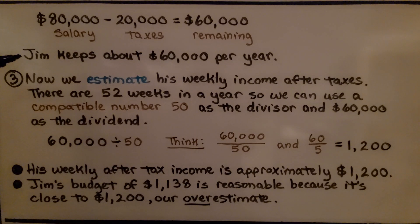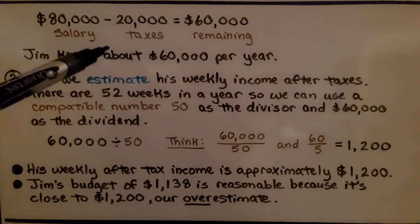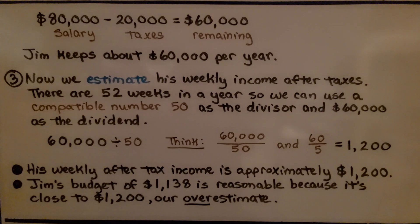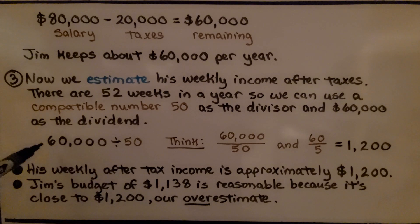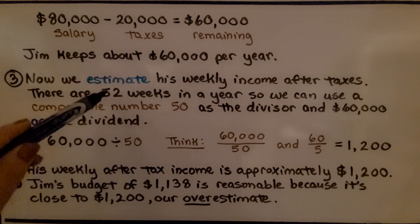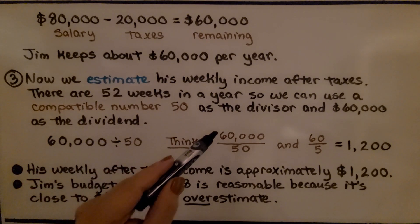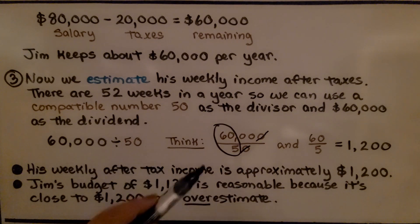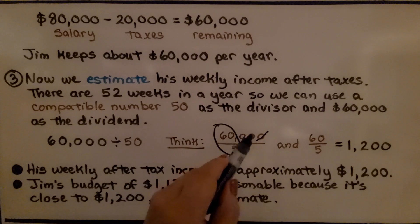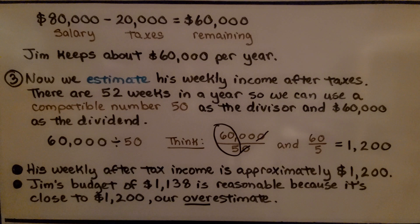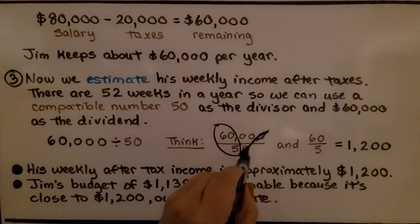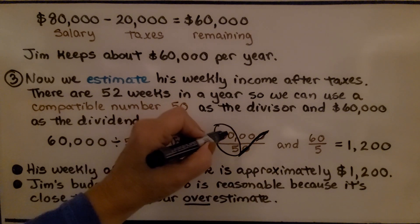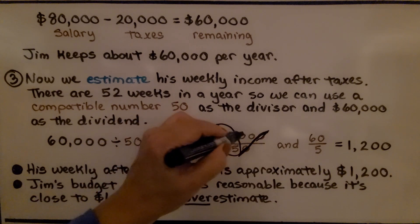Jim keeps about $60,000 per year after taxes — these are estimates, so it's not exact. Now we estimate his weekly income. There are 52 weeks in a year, so we use the compatible number 50 instead of 52, dividing $60,000 by 50. We can cancel a zero from each: 60,000 divided by 50 becomes 60 divided by 5, which is 12, with two zeros remaining, giving us $1,200.